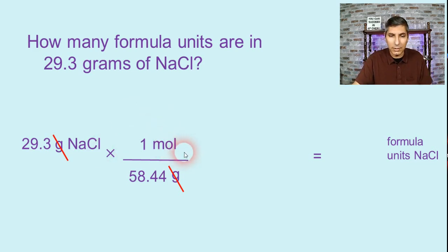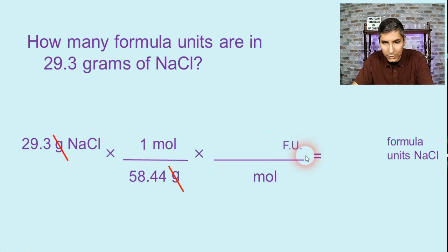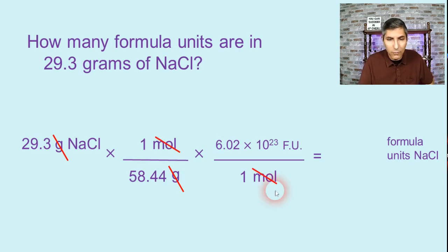And now we can convert to formula units. And so in our next conversion factor, moles will go on the bottom and then formula units will go on the top. I apologize for the abbreviation there. Now, how many formula units are in a mole? Well, however many little teeny tiny particles there are, it's 6.02 times 10 to the 23rd formula units in one mole of that substance. So now we can cancel moles top and bottom. And whenever we do the multiplication and division, 29.3 divided by 58.44 times Avogadro's number, we find that we have about 3.02 times 10 to the 23rd formula units of sodium chloride.